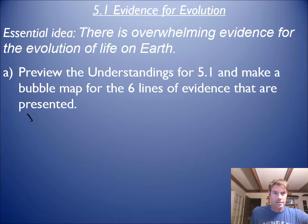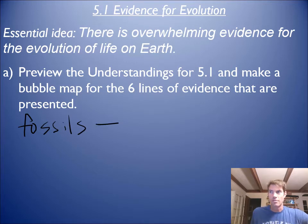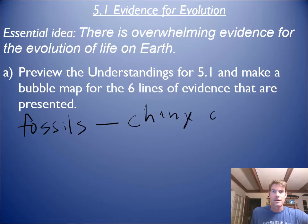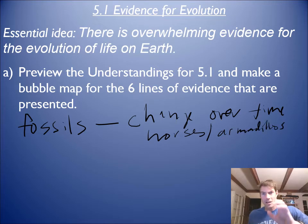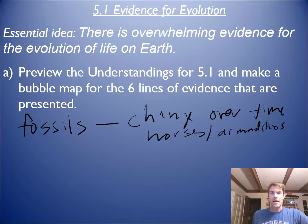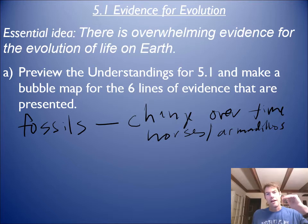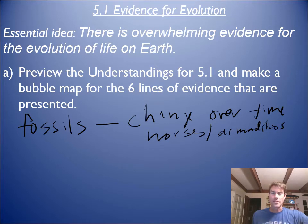The first line of evidence is fossils. Fossils have been found over the last two to three hundred years, and what they show us is that life can change over time. We see horses and armadillo fossils, and we see how they slightly change over time as we dig them up. Geologists established that the deeper you go, the older you get in the earth. Earlier forms of different animals and plants show that they're simpler, less sophisticated, less complex.